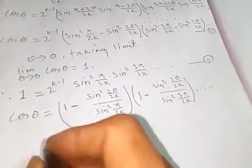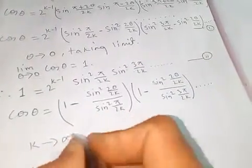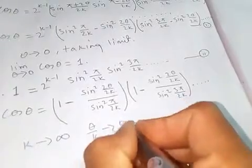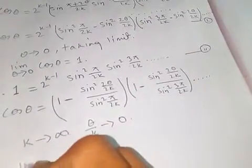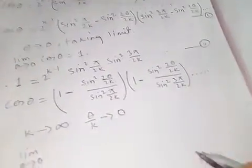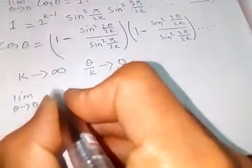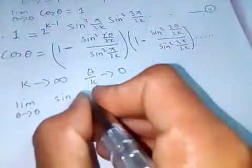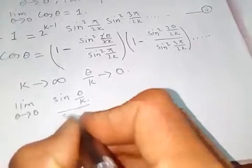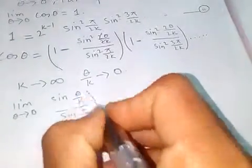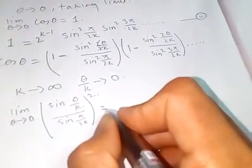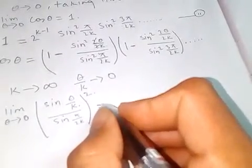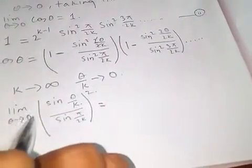Now taking k to infinity, theta over k tends to zero. When simplifying, I can write sine of 2 theta over k over sine of pi over 2k, squared. Applying L'Hôpital's rule as k tends to infinity.